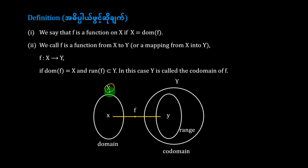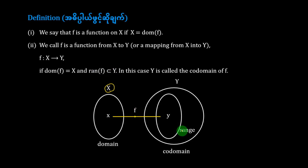If f is equal to one, only the good domain of f is equal to one.